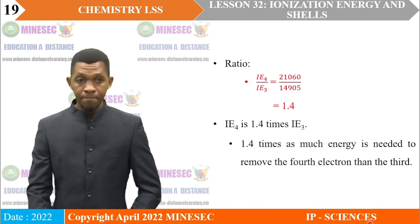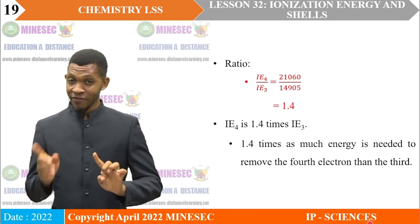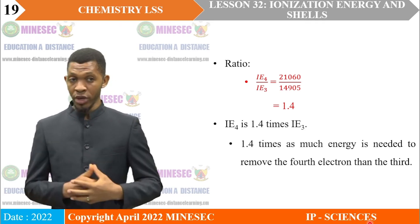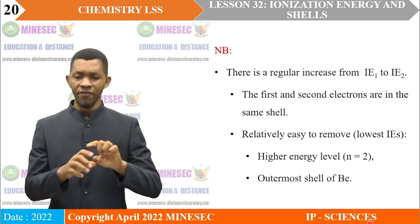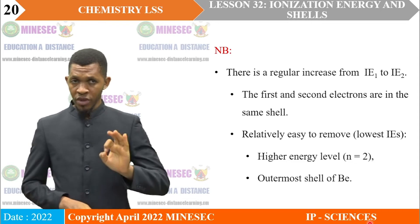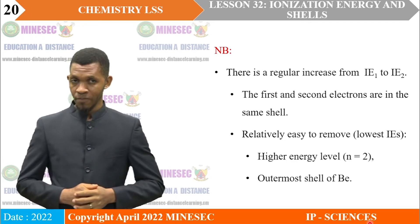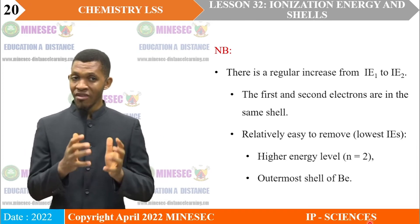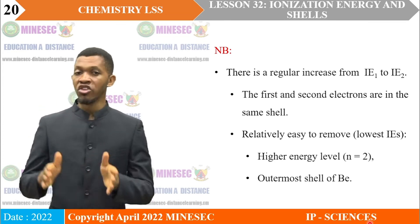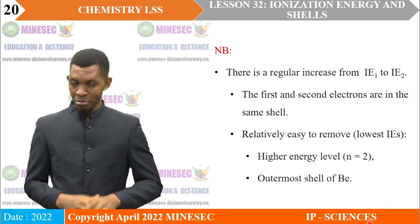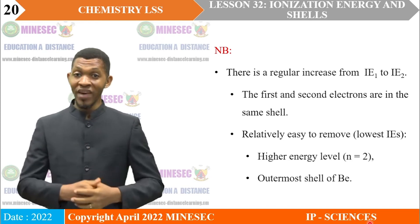So from the successive ionization energies of beryllium: the first and second electrons are in the same shell — the outermost shell (the second shell). They are relatively easy to remove because that shell is at a higher energy level and further from the nucleus, so the nuclear attraction is weaker. There is a large jump from the second to the third ionization energy — the energy required to remove the third electron is about 9 times the second — indicating the third electron is in a different, closer shell.